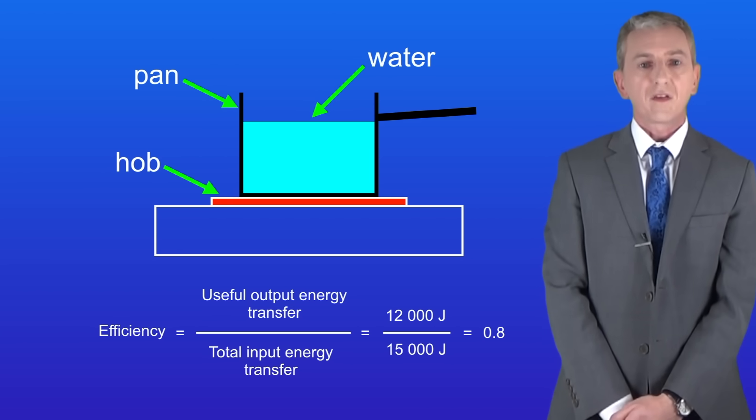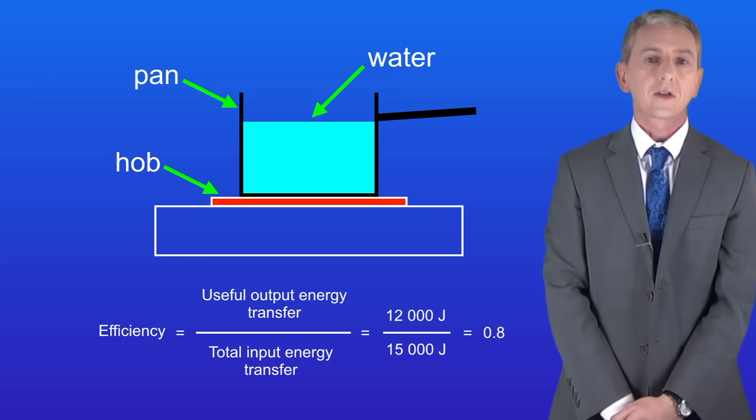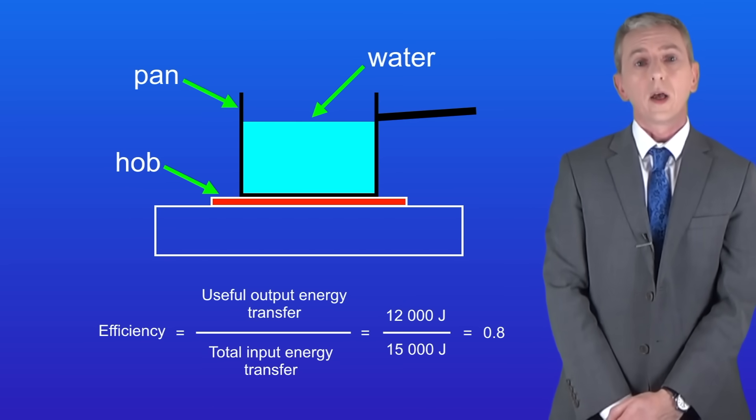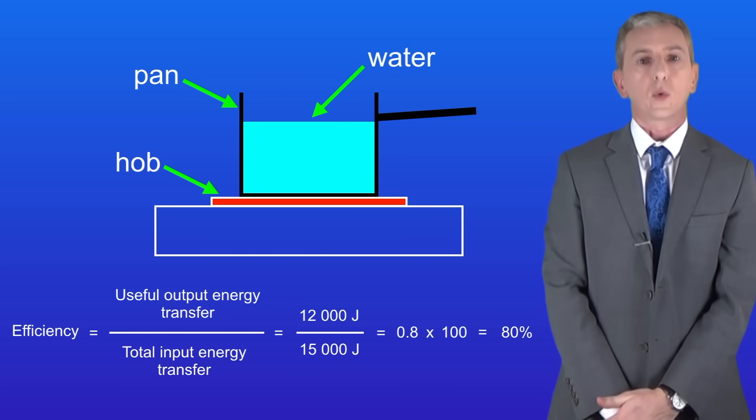Now there are a couple of points about this that you need to learn. Firstly we've calculated efficiency as a decimal and that's fine. You're expected to do that in your exam. However we can also calculate efficiency as a percentage and to do that we multiply our decimal value by 100 like this. Now you could be asked to do that in your exam as well.